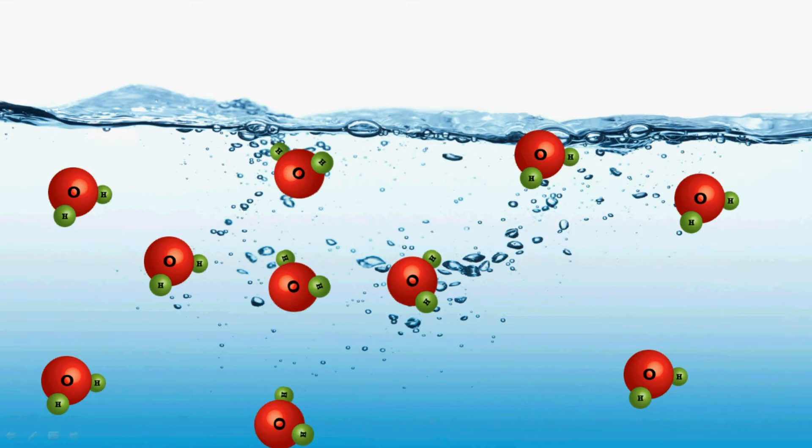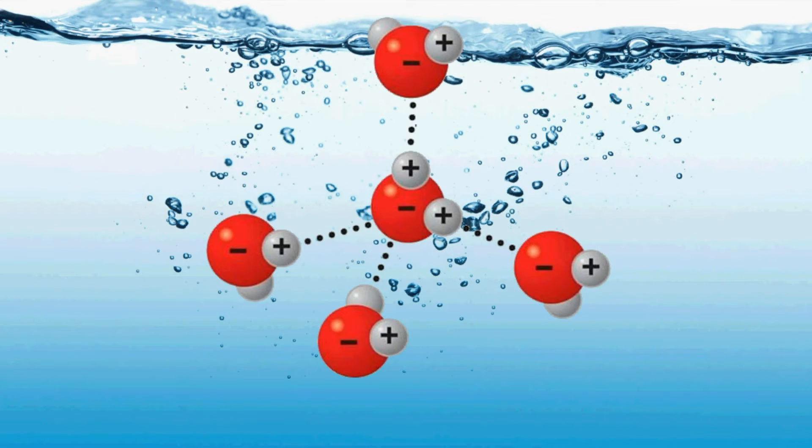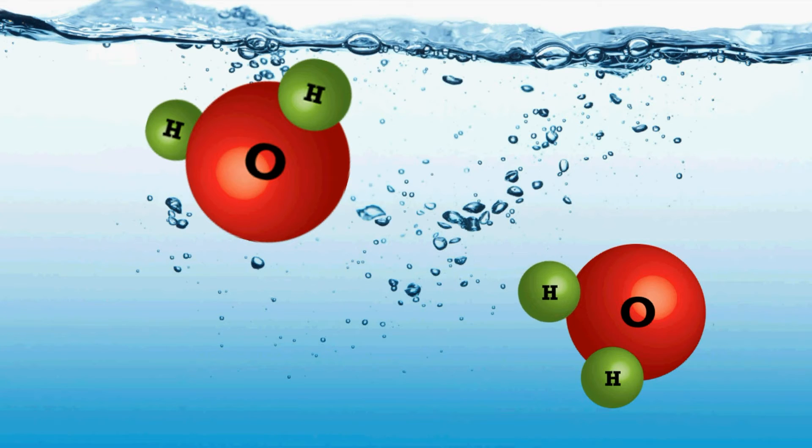So this covalent bond is a polar covalent bond. Now, just like opposite poles of a magnet attract each other, opposite poles of water molecules also attract each other. Then they form hydrogen bonds. But sometimes that negative terminal snatches away positive hydrogen from another molecule.